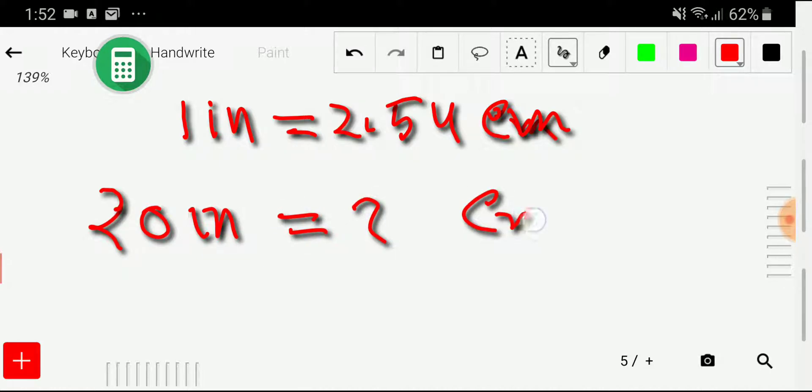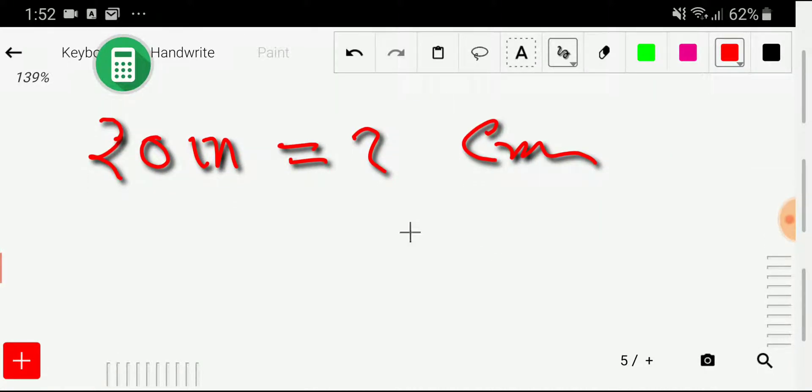...into centimeters. How will we convert 20 inches into centimeters? To convert 20 inches into centimeters, we have to know the equivalence between inch and centimeter. We know that one inch equals 2.54 centimeters.